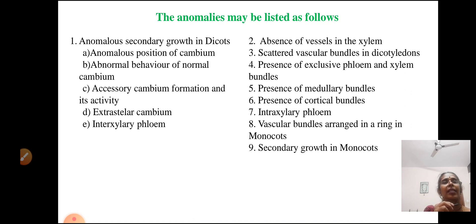And other than this: absence of vessels in the xylem, scattered vascular bundles in dicots, presence of exclusive phloem and xylem vessels, presence of medullary bundles, presence of cortical bundles, vascular bundles arranged in a ring in monocots, and secondary growth in monocots. So these are some of the anomalies.